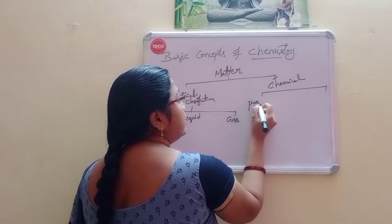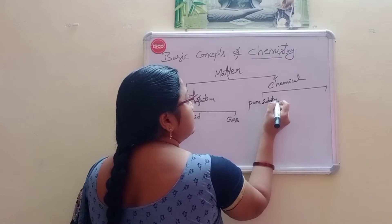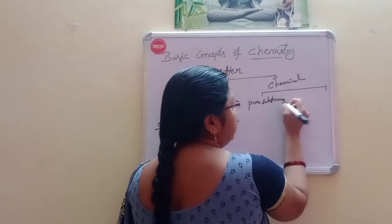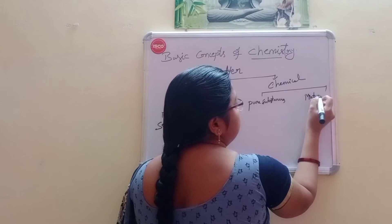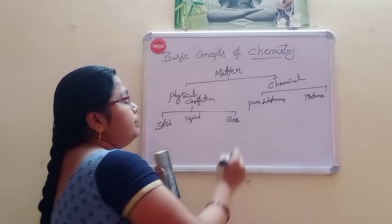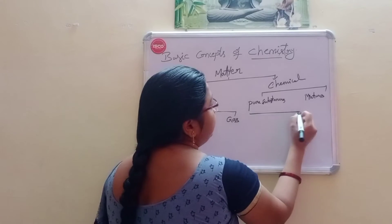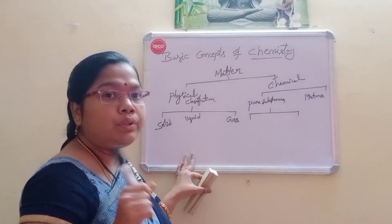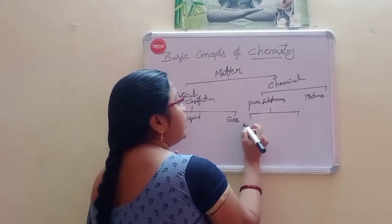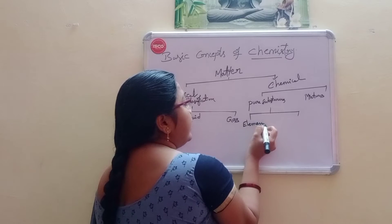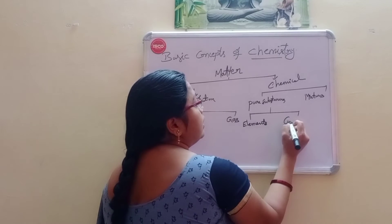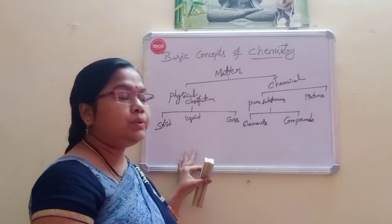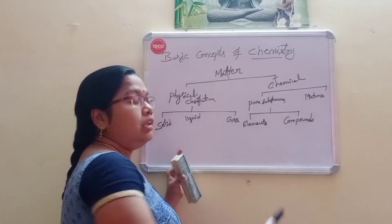Chemical classification is divided into two types: pure substances and mixtures. Pure substances are divided into two types: elements and compounds.